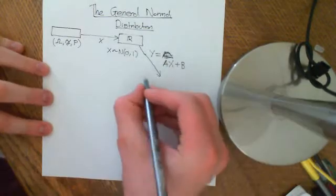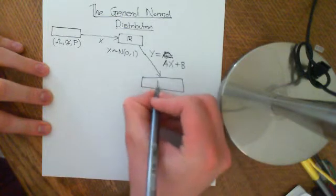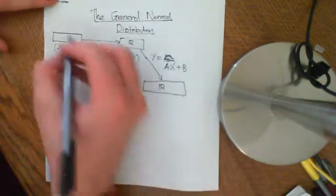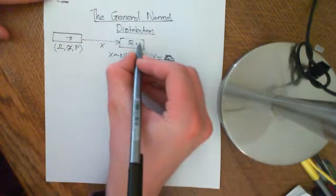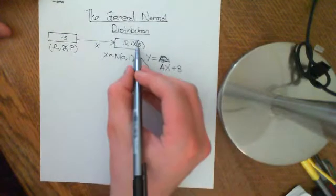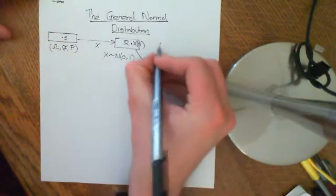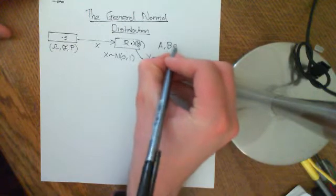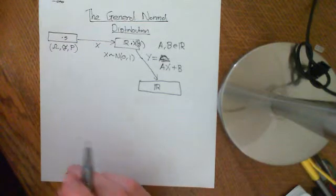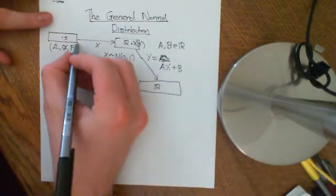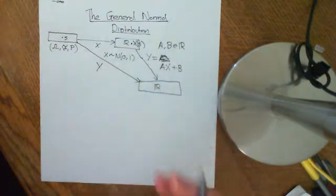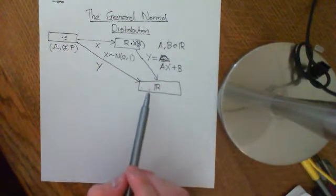What I mean by that is this random variable takes outcomes and ascribes a real number, X of s. I want you to take that real number, multiply it by some a, which is a real number — so a and b are both elements of the real numbers — multiply by a, and then add on b. You get some new random variable Y, and what we want to ask is how is Y going to be distributed?